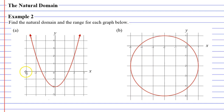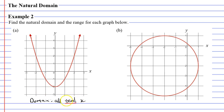So what do we write down when the domain includes all the values on the x-axis? We simply state that the domain is all real x. Some of you may be wondering why we use the word 'real' here. In the previous chapter, we spoke about real numbers, and the real numbers are all the numbers that are on the x-axis.